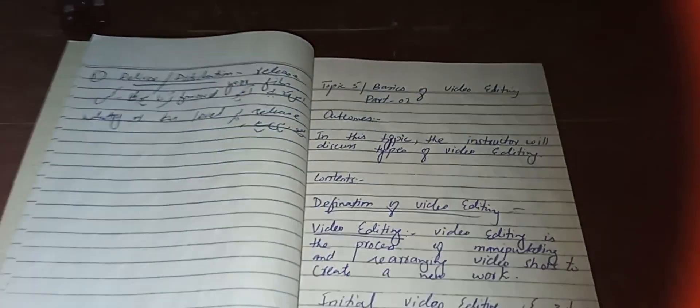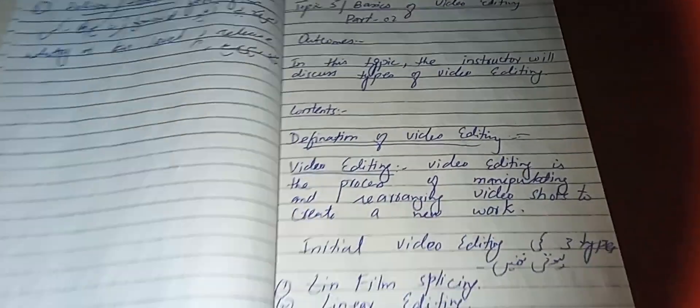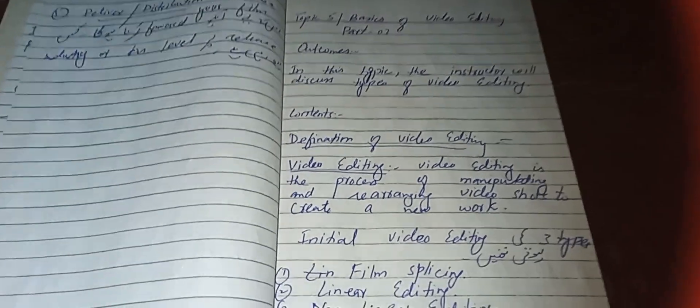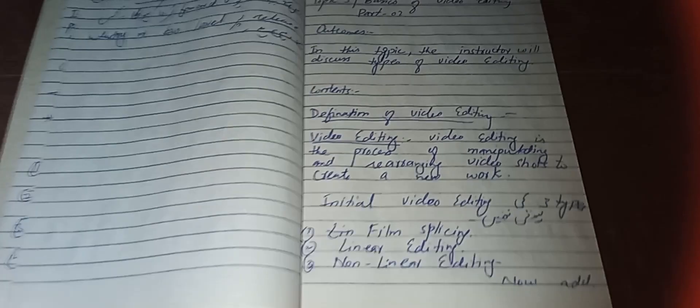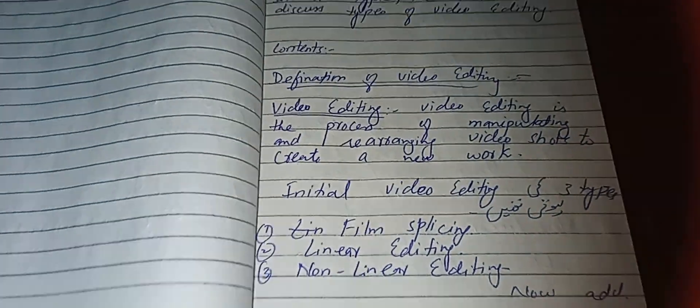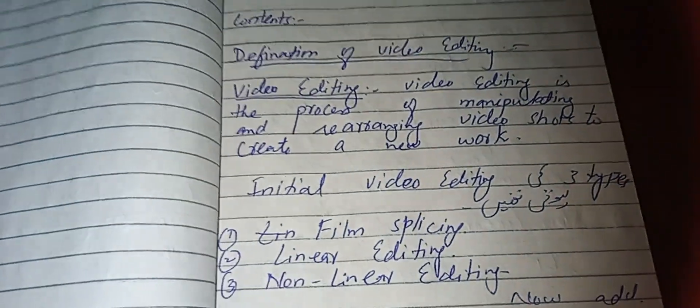First of all, we know the definition of video editing. Video editing is the process of manipulating and rearranging video shots to create a new work. In short, we have created a video as such.